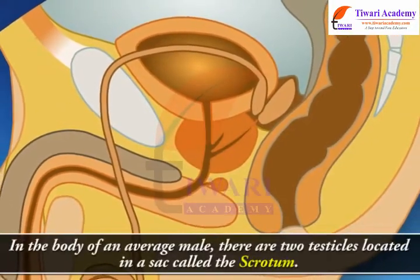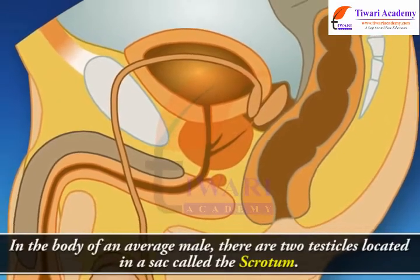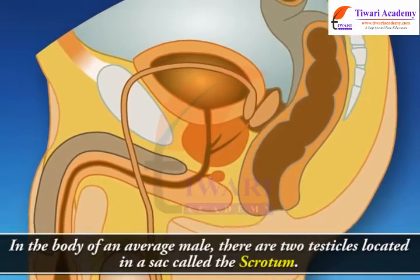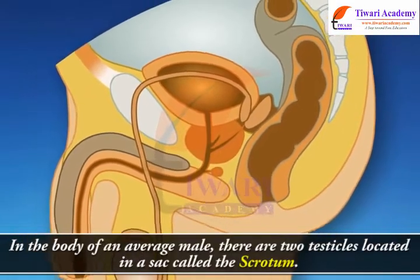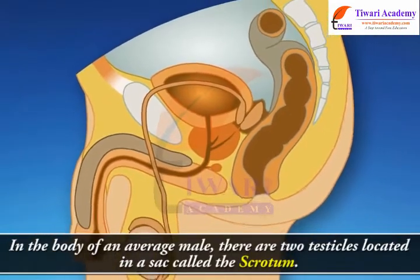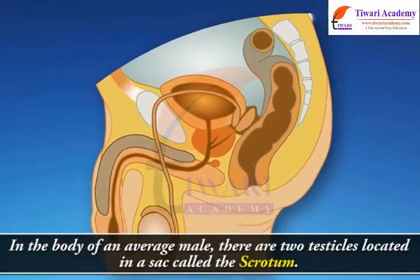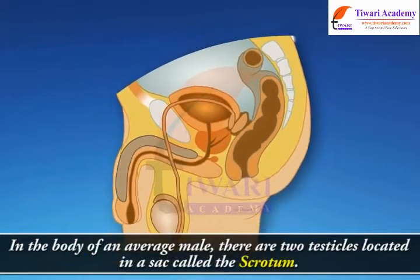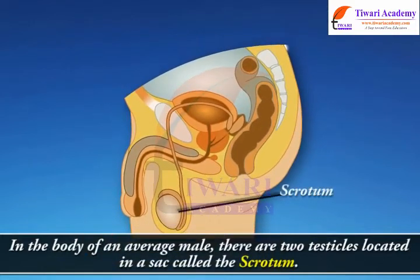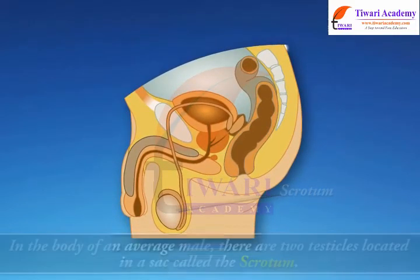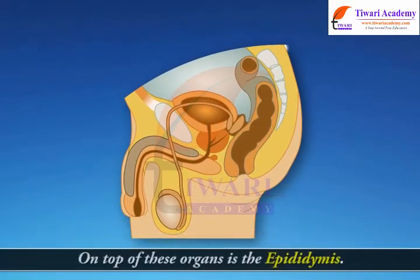In the body of an average male, there are two testicles located in a sac called the scrotum. On top of these organs is the epididymis.